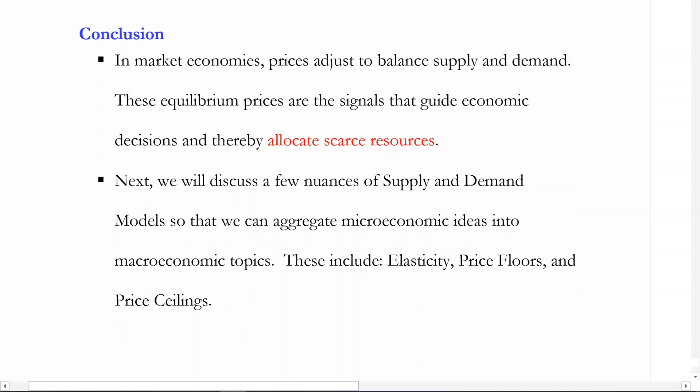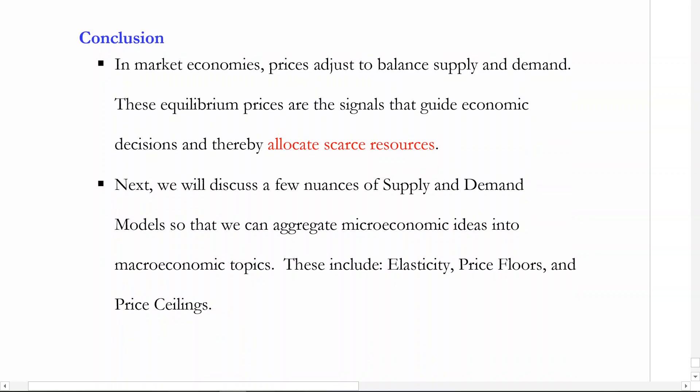That is it for the basic mechanics of supply and demand. Tying this back to the first chapter, it is through the market and ultimately through the price system that guides our economic decisions and facilitates these interactions between buyers and sellers. Now that we have the mechanics down, we're going to use supply and demand to talk about macroeconomic ideas like price floors and price ceilings, applying these to things in the labor market like minimum wage, and macroeconomic policies like rent ceilings. That's it for this video — see you in the next one.